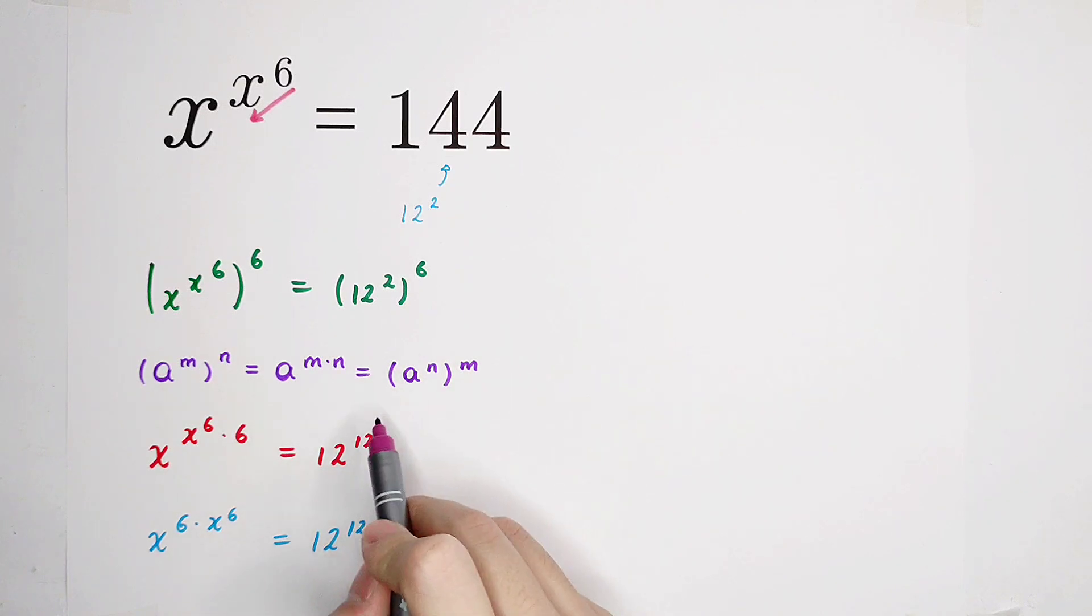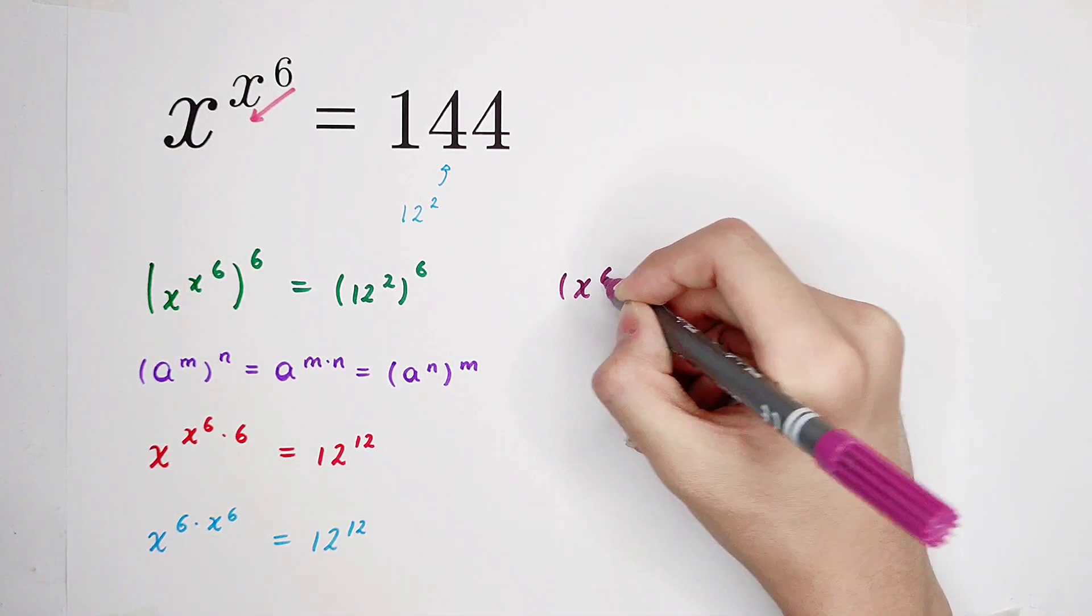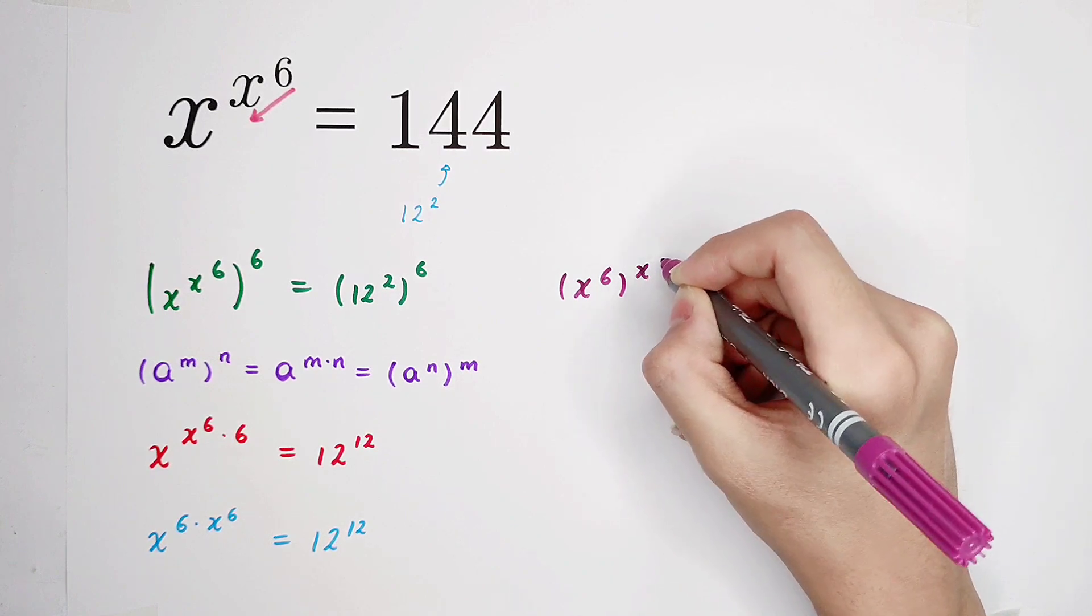So here it is, a to the power of n all to the power of m. a is x, n is 6, and m is x to the power of 6, so it is x to the power of 6 all to the power of x to the power of 6.